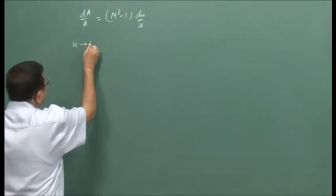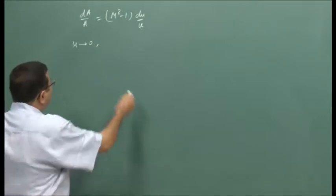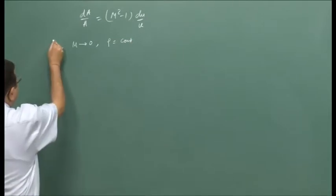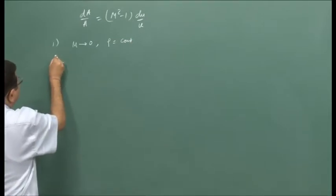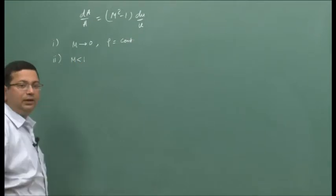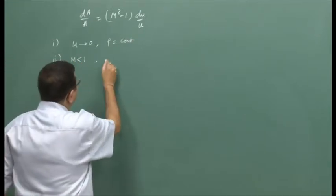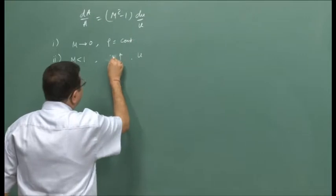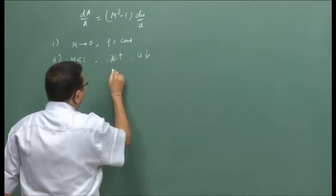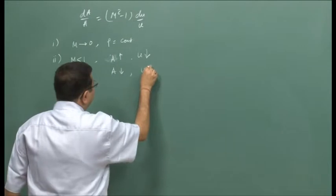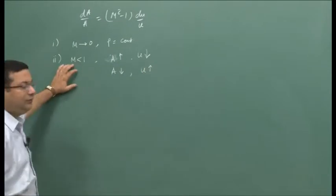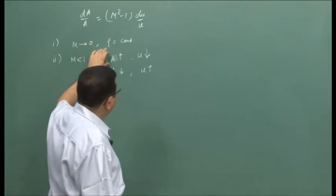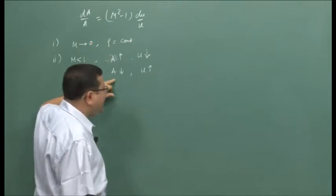If Mach number is very small, tending to 0, we have shown that density is constant, so we have an incompressible flow. Then we have shown that if the flow is subsonic, as area increases velocity will decrease, and as area decreases velocity will increase. So for a subsonic flow, a diffuser needs to have an increasing area or a diverging passage, and a nozzle needs to have a converging passage.